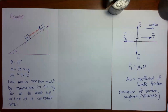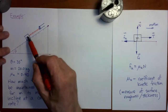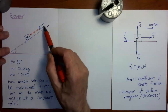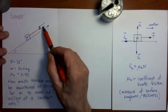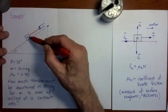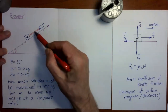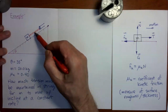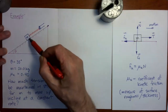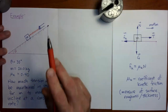Now we're going to do an example problem in which a kinetic friction force appears. In this example, we have a mass which is being dragged up an incline by a string held parallel to the incline. There is kinetic friction acting between the mass and the incline, and we would like to know how much tension must be maintained in the string in order for the mass to move up the incline at a constant speed.